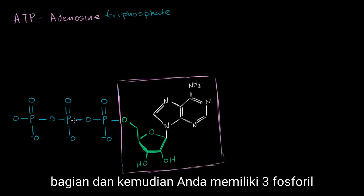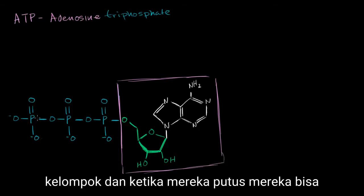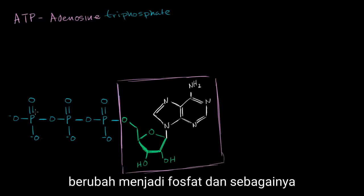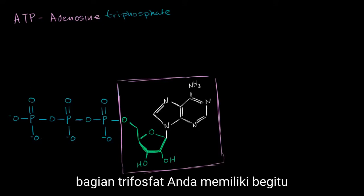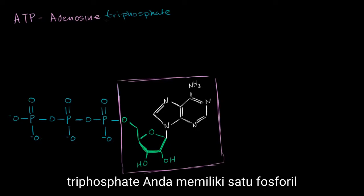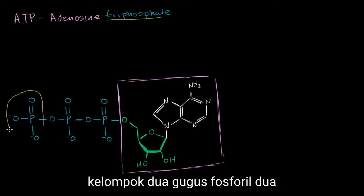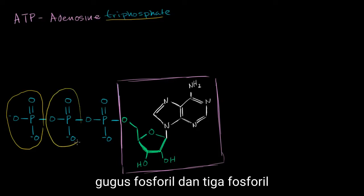And then you have three phosphoryl groups. When they break off, they can turn into a phosphate. So the triphosphate part — you have one phosphoryl group, two phosphoryl groups, and three phosphoryl groups.